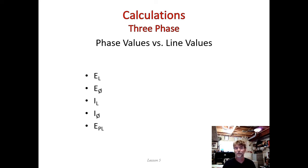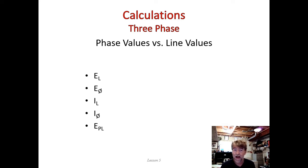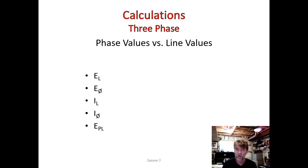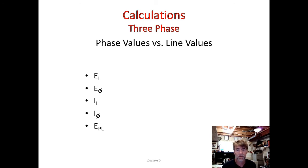Here's the slide I left off with in the previous video. This is not an exhaustive list by any means, but it's an example of the kinds of notations we're going to be looking at. It says phase values versus line values. The values we're talking about are E, which is voltage, and I, which is current. Those are the values we're going to be calculating, and the subscripts here represent phase versus line.